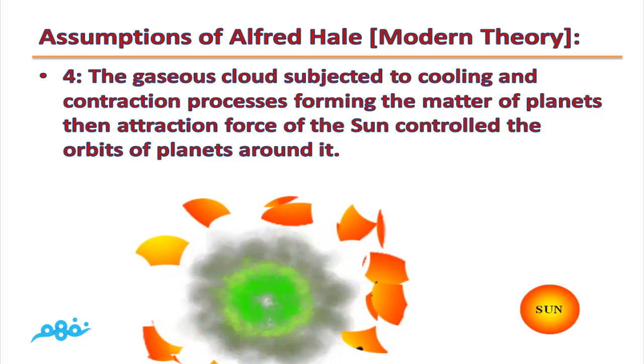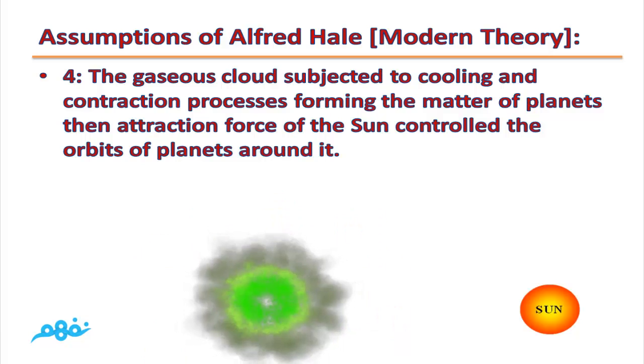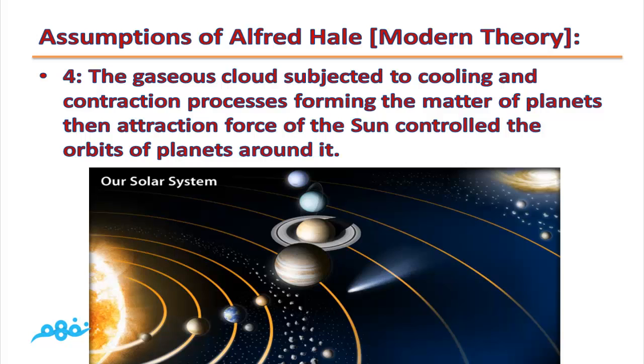The gaseous cloud subjected to cooling and contraction processes forming the matter of the planets. Then attraction force of the sun controlled the orbits of the planet around it. So this gaseous cloud cooled down and contracted, then it formed the planets.